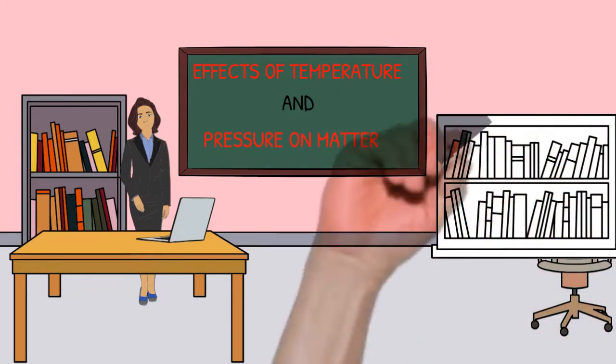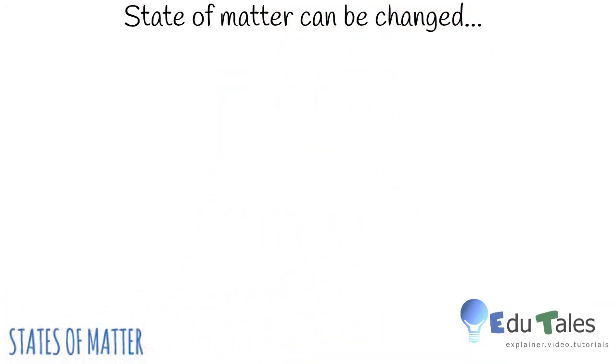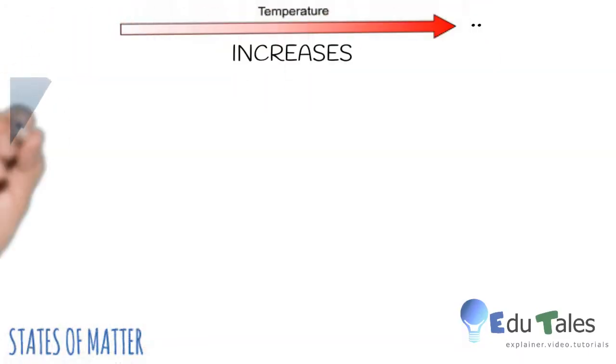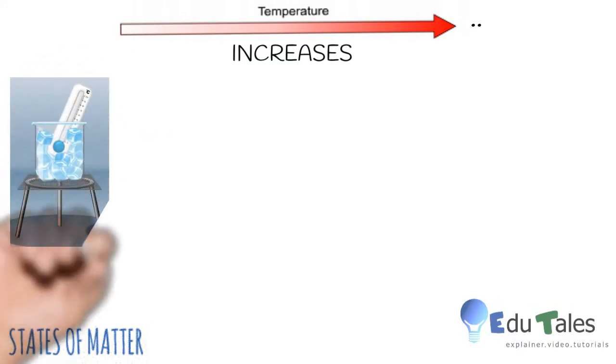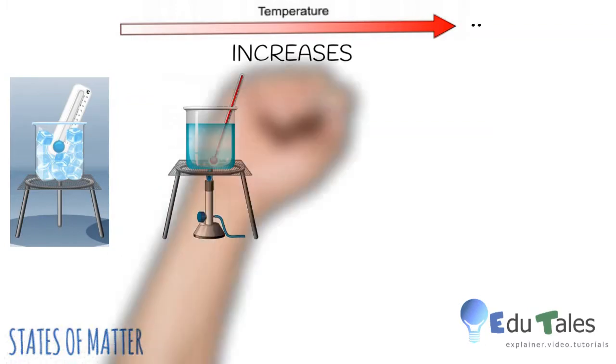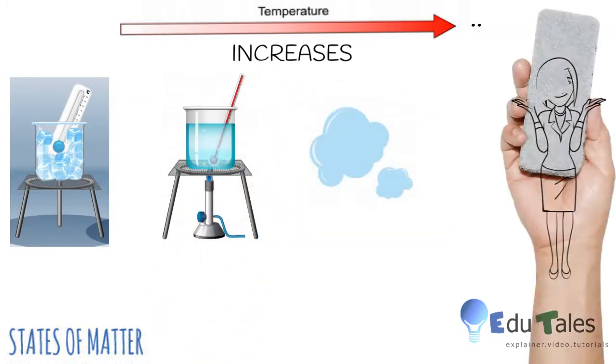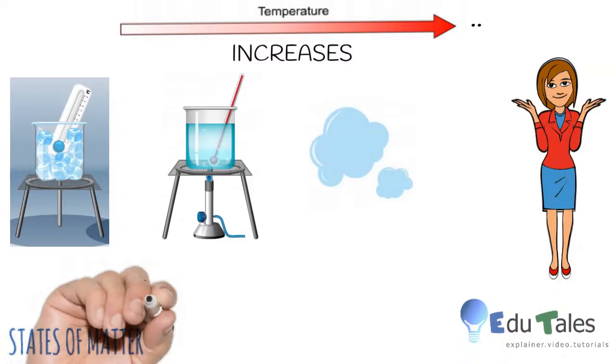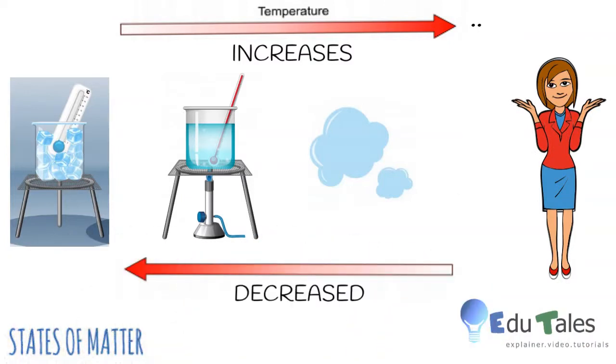Let us begin by learning the effects on matter due to change in temperature. When the temperature increases, solid objects get converted into liquid and the liquid gets converted into gases. But, if the temperature is decreased, the gas molecules combine to form liquid and liquid gets converted into solid substances.